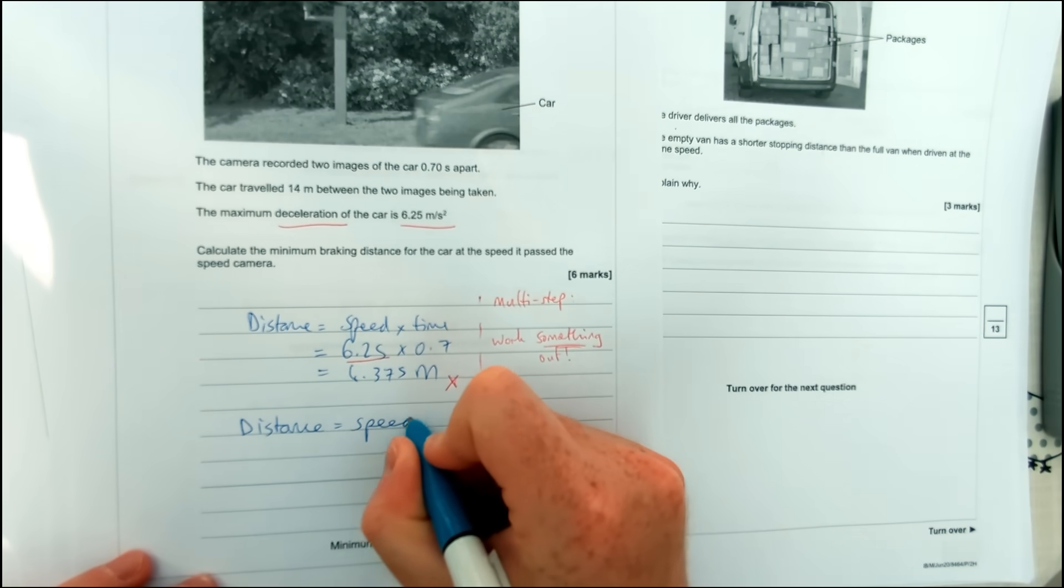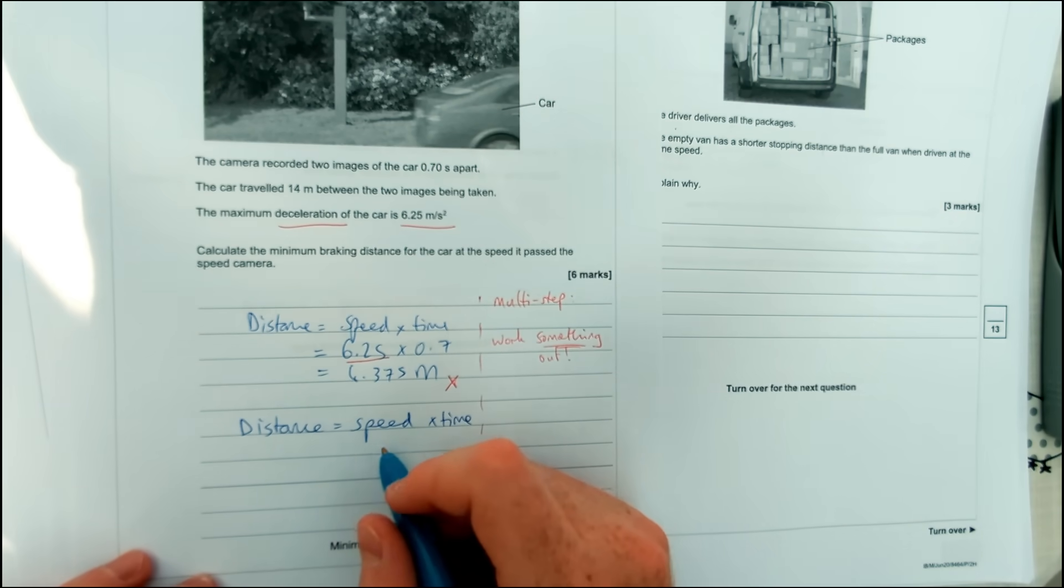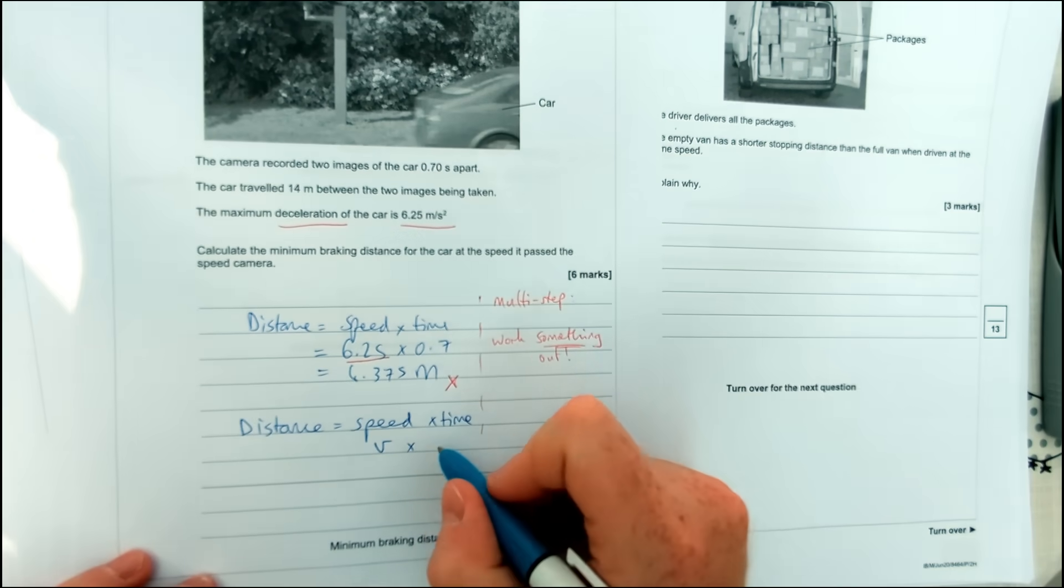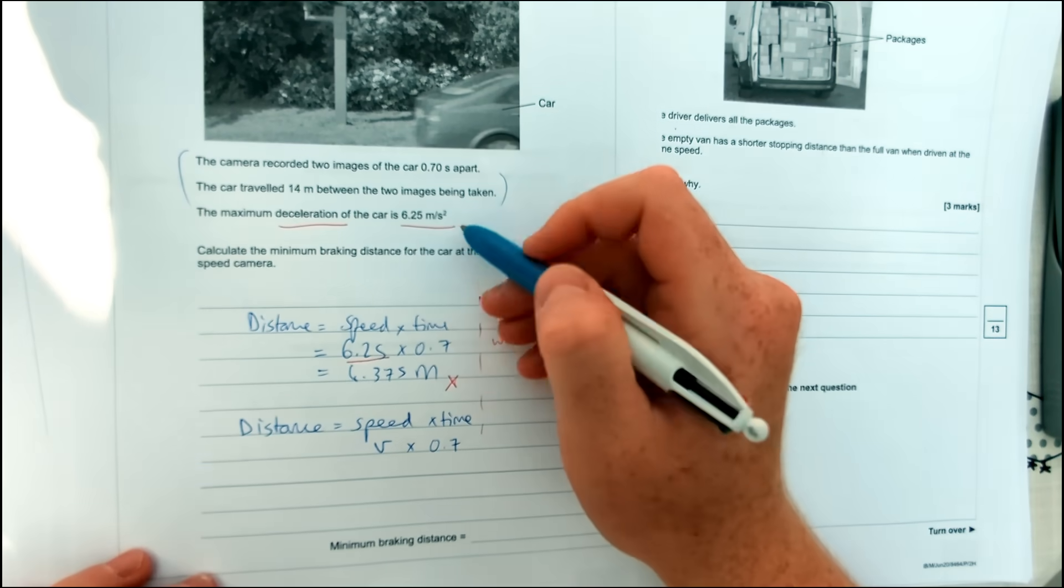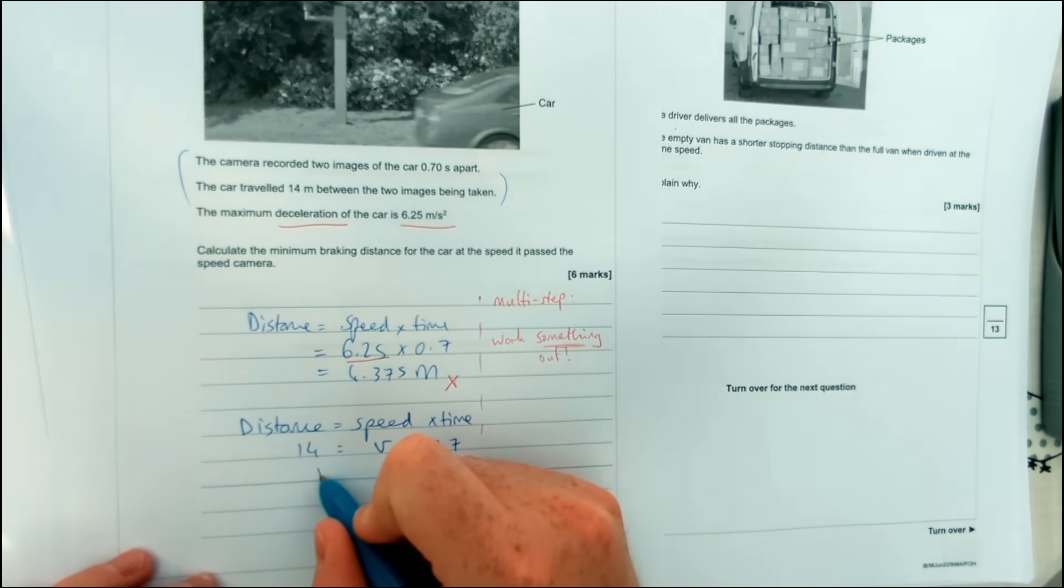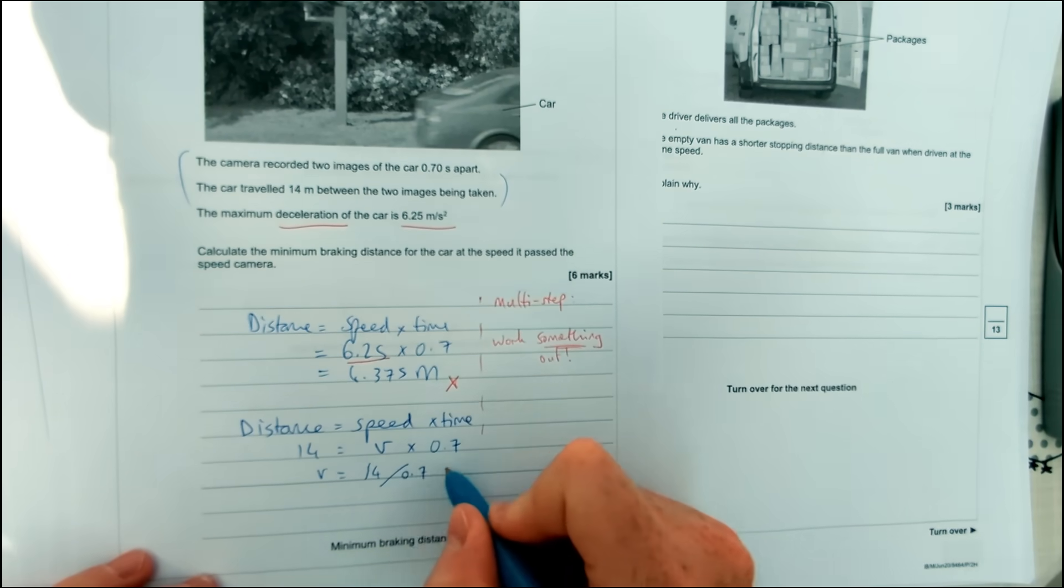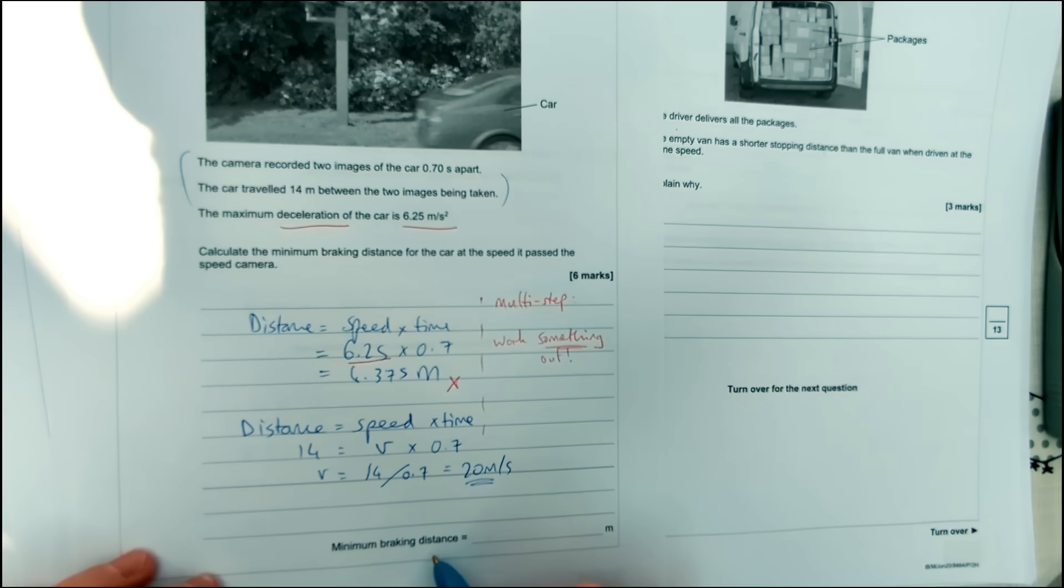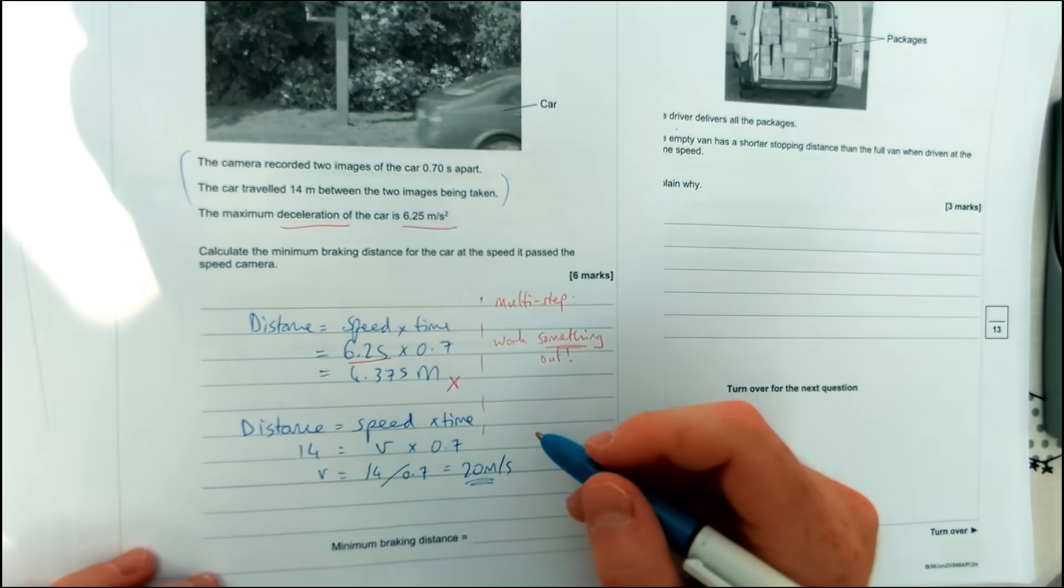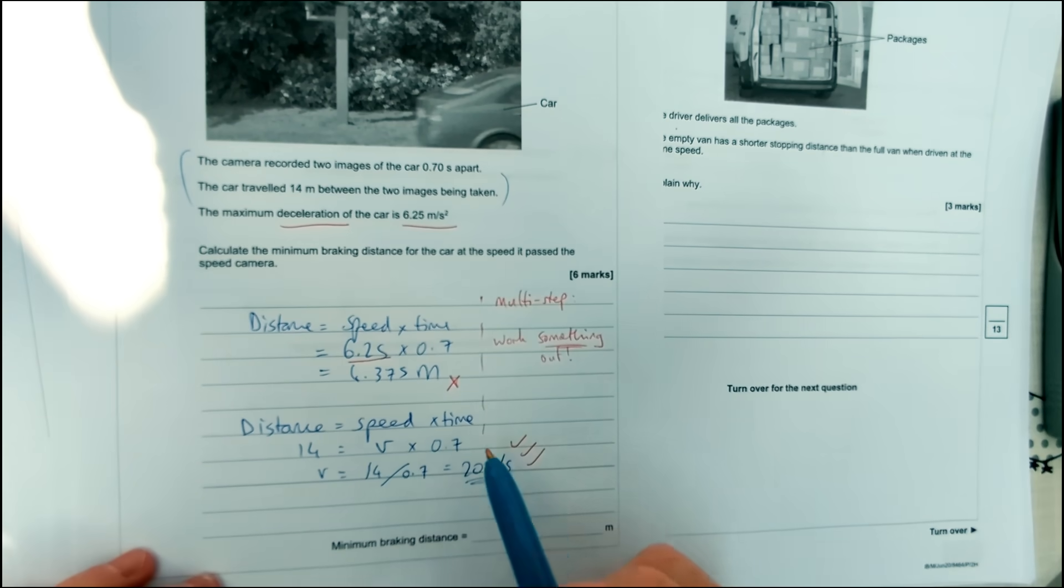So what we're going to do first of all is actually use this same equation. For this question we would do distance equals speed times time, but this time we're going to use that to work out the speed the car is traveling at initially. So speed we don't know, so I'm just going to write v for speed here. Time we do know, so it's 0.7 seconds, and for this section it says the car traveled 14 meters between the two images being taken. So therefore allows us to work out the speed which is going to be equal to 14 divided by 0.7, which is equal to 20 meters per second. Now you might think that we've gone backwards there, we've got speed, we're trying to find distance. However, for that bit of the question we've got three of our six marks already because we just worked something out correctly using the values we've been given.